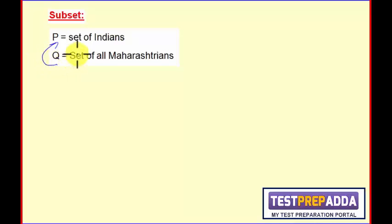But all elements of set P do not fall into set Q, because people living in Tamil Nadu, Gujarat, etc. are also Indians but they are not Maharashtrians. So set Q is called a subset of P.